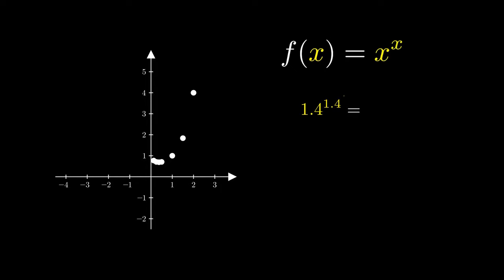But what about decimals? The decimal 1.4 is really 7 over 5 as shorthand. This means we can write this as the 7th power followed by the 5th root. This evaluates to 1.602. What about larger decimals? 1.41 really equals 141 over 100. So we can write this in terms of the 100 root. This approximately equals 1.623.